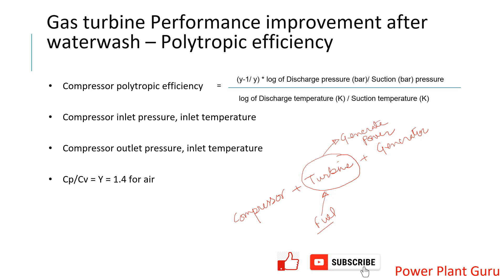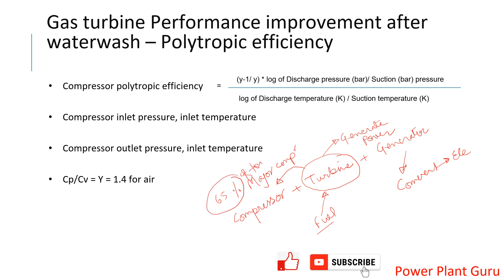Fuel energy is converted into power by the turbine. The generator then converts that mechanical power into electrical energy. However, not all the power generated by the turbine goes to the generator — the major consumption is in the compressor. Approximately 65% of the total power goes to the compressor. So if a turbine generates 100 megawatts, 65 megawatts goes to the compressor and only 35 megawatts is available for the generator.